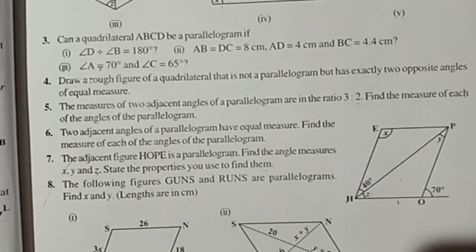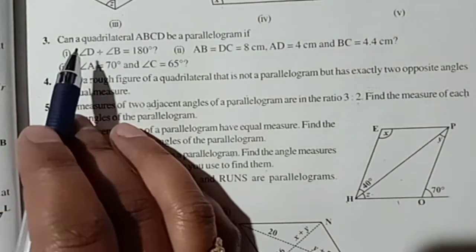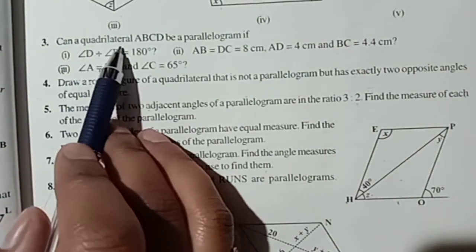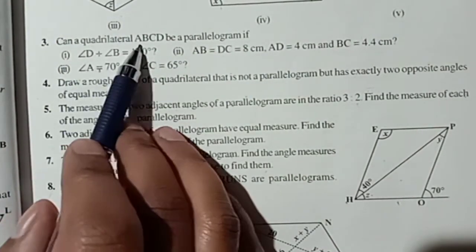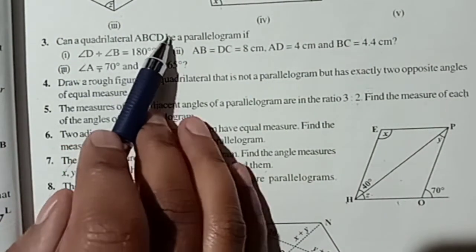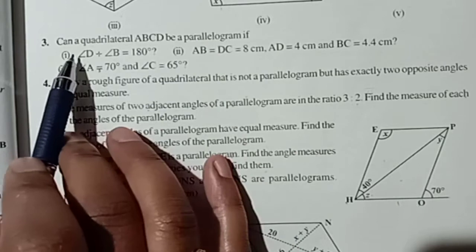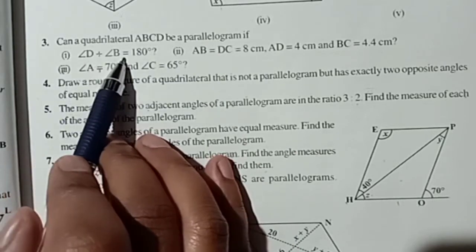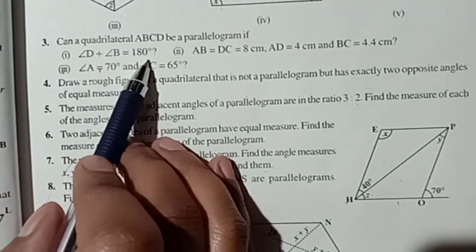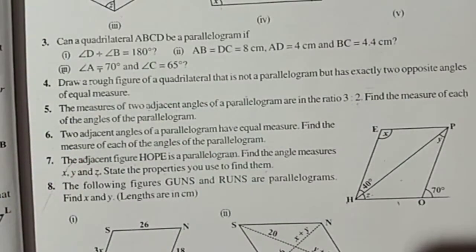Students, I am going to continue exercise 3.3 question number 3. Can a quadrilateral ABCD be a parallelogram if angle D plus angle B equals 180 degrees?